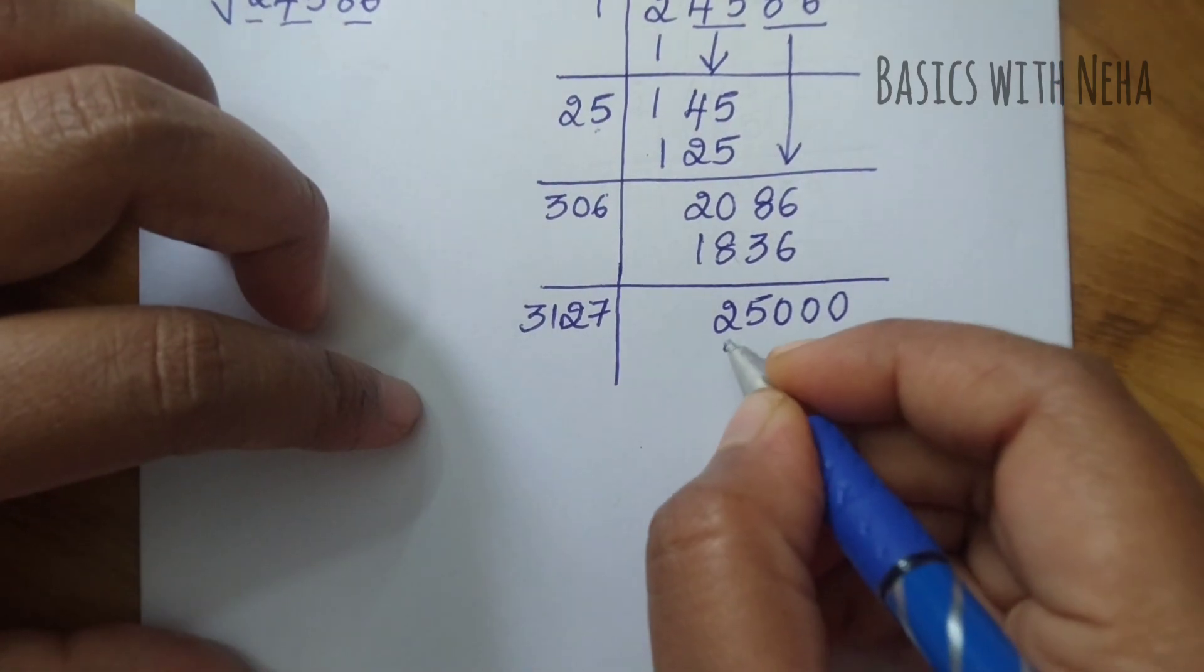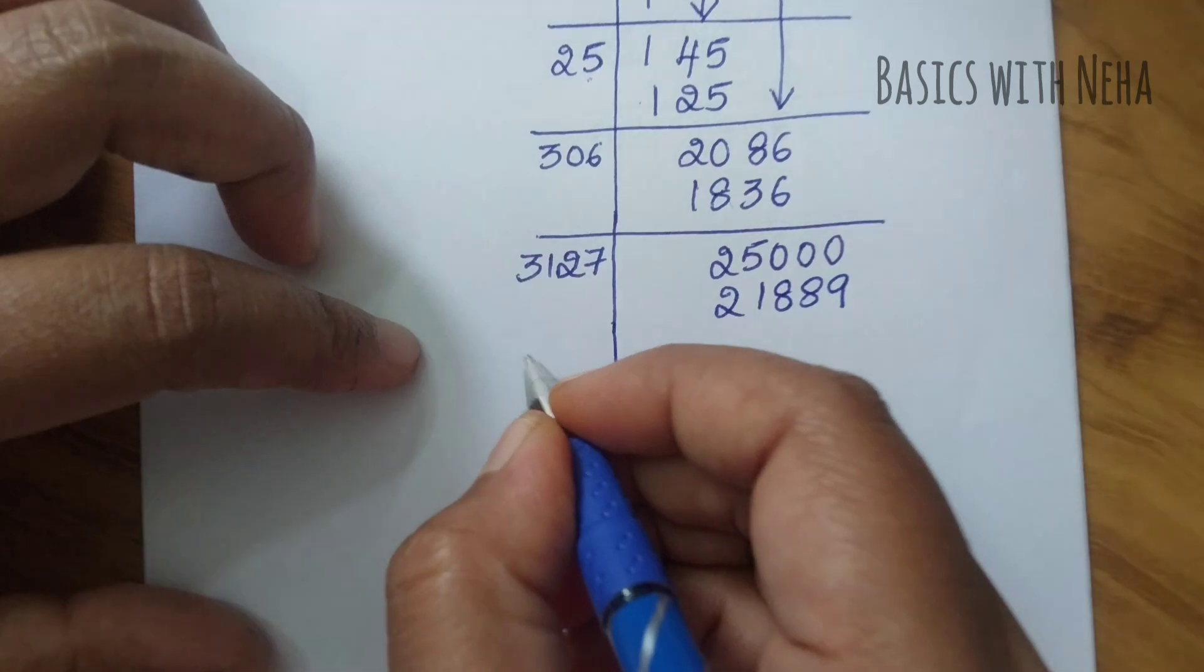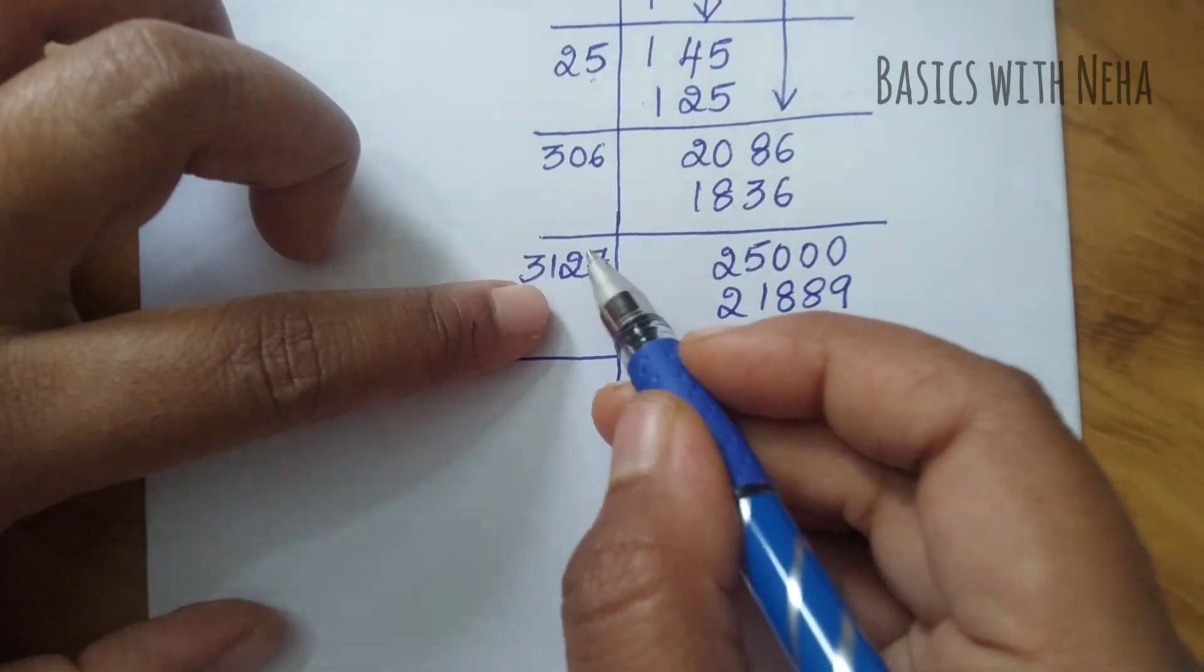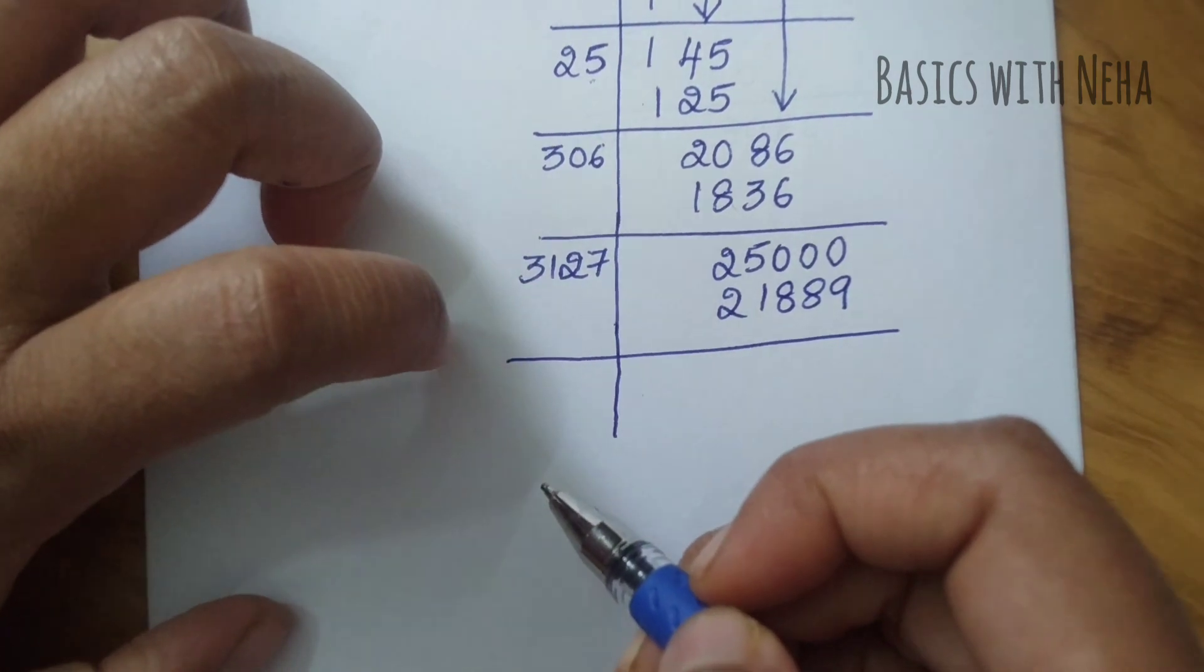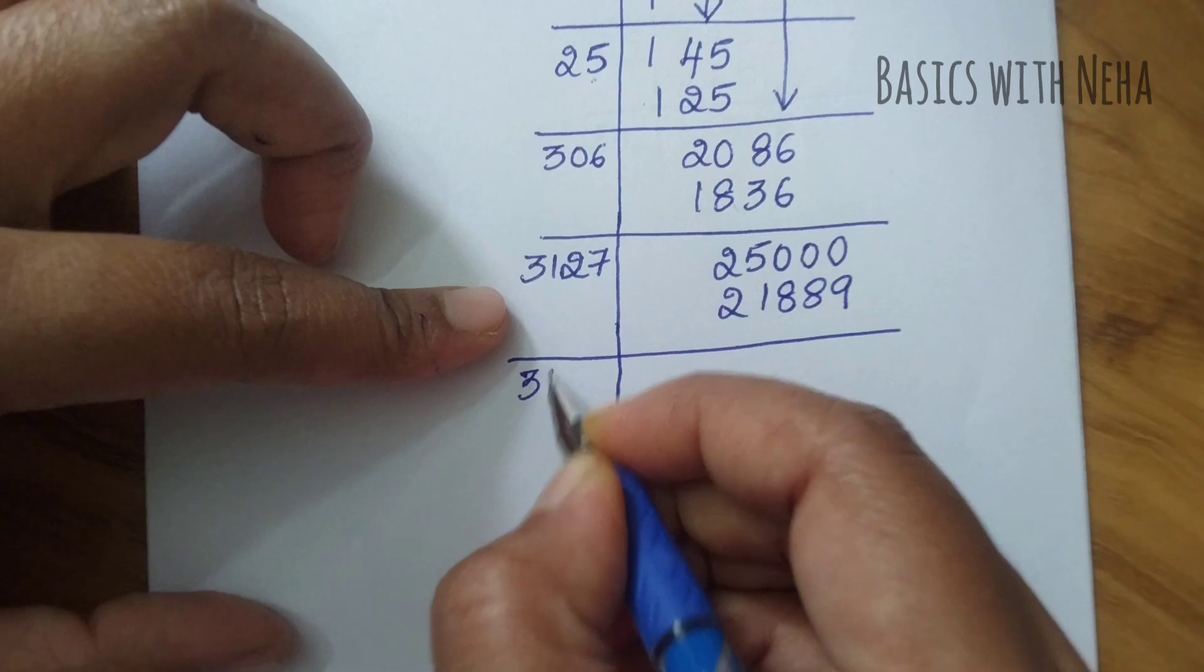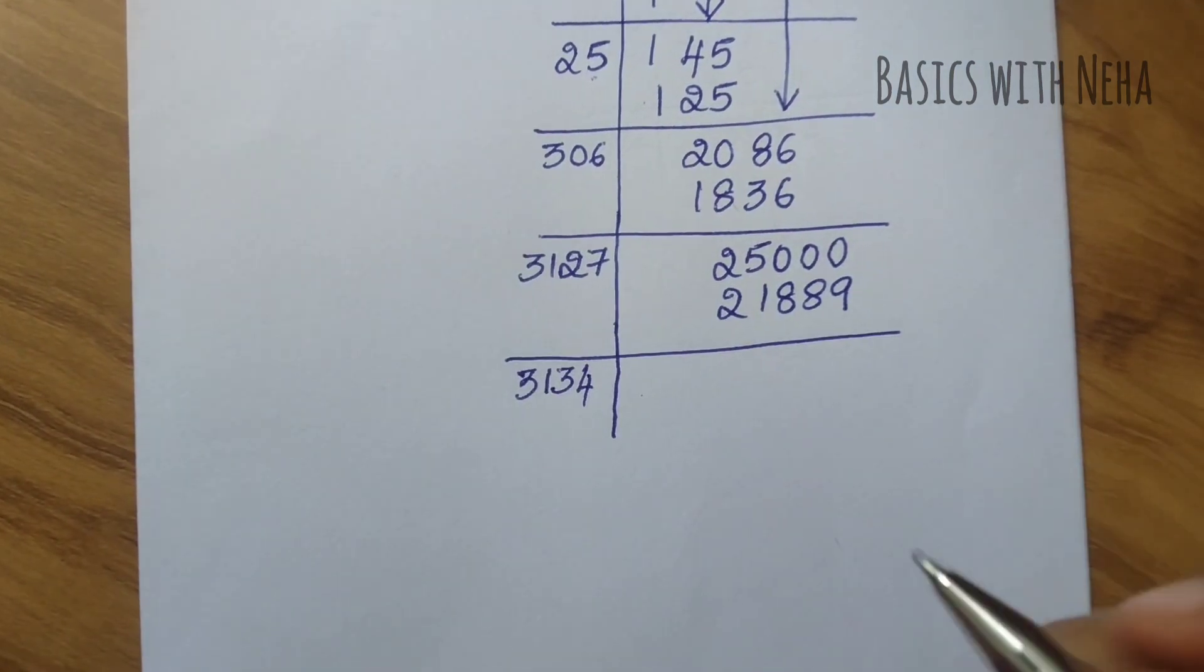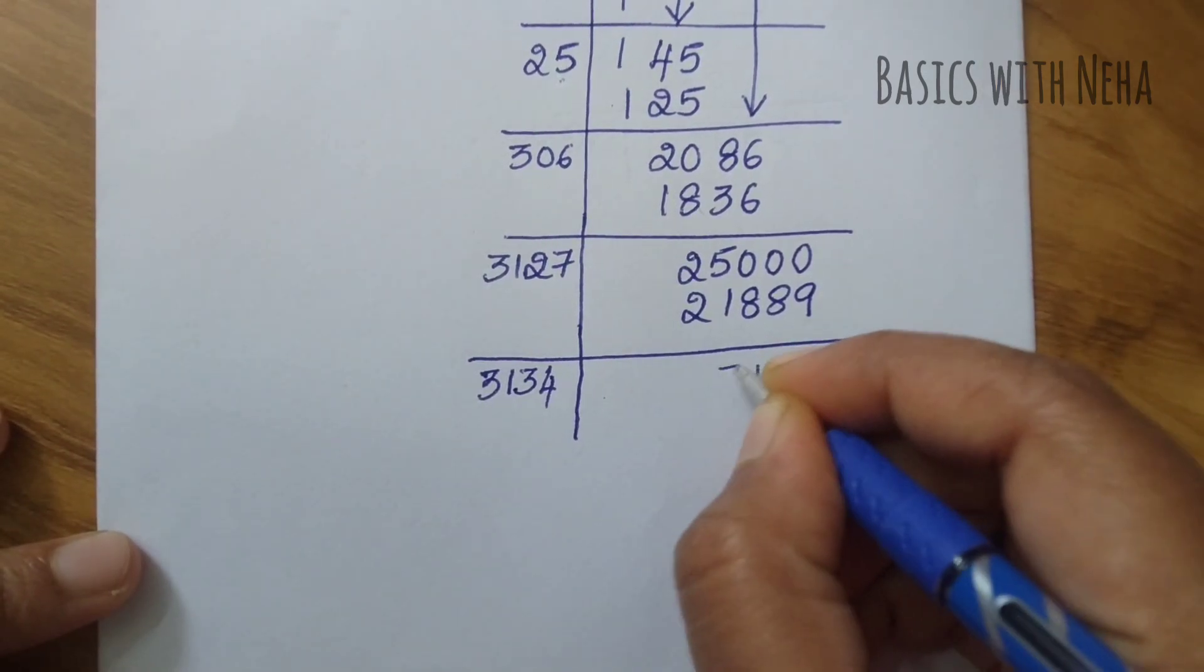I've taken 7, so I've added 7, making it 3127 plus 7, which is 3134. Let's subtract this. It will be 3111.